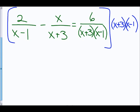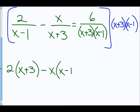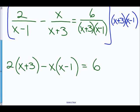In the left fraction, 2 over x minus 1, the x minus 1s cancel out, and we're left with 2 times x plus 3. In the middle fraction, the x plus 3s cancel out, and we're left with x times x minus 1. On the right-hand side, everything cancels out, and just the numerator is left.